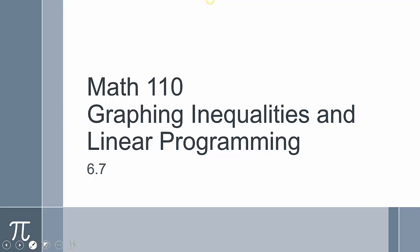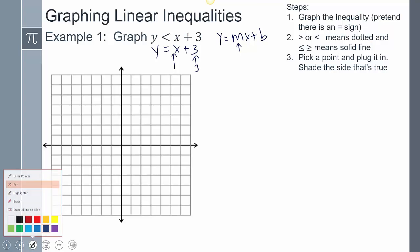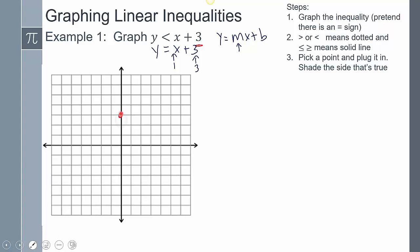Math 110, graphing inequalities in linear programming, sections 6.7, example number one: graph y is less than x plus 3. When graphing this, we pretend the inequality symbol is an equal sign, giving y equals x plus 3. In slope-intercept form, the slope is 1 and the y-intercept is 3, so we start plotting: place a point at 3 on the y-axis, then go up 1 over 1.